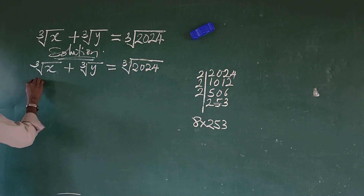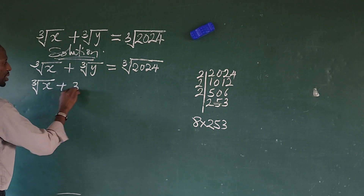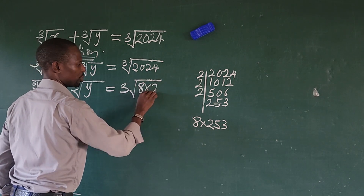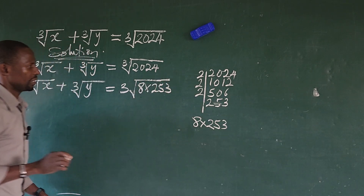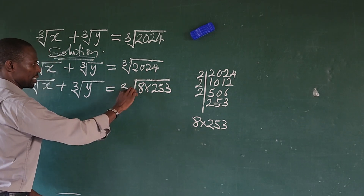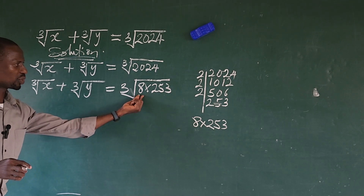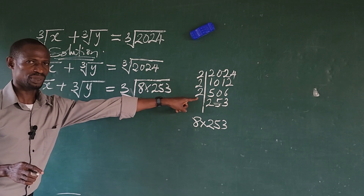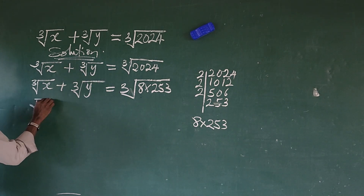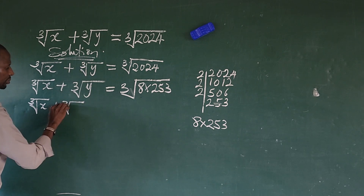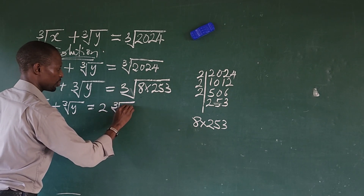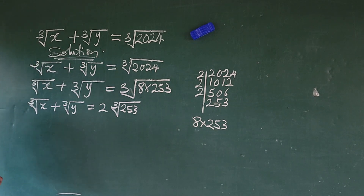So we can rewrite this as: the cube root of x plus the cube root of y equals the cube root of 8 times 253. The cube root of 8 is 2, so we factor that out to give us: the cube root of x plus the cube root of y equals 2 times the cube root of 253.